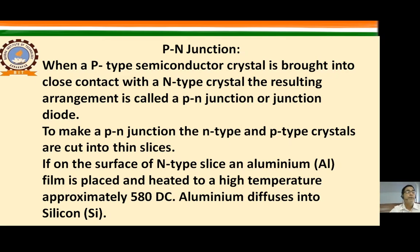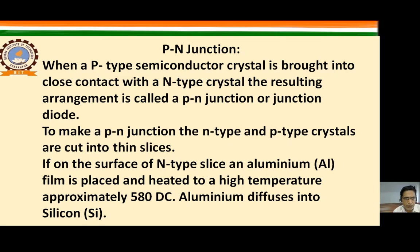When a p-type semiconductor crystal is brought into close contact with an n-type crystal, the resulting arrangement is called a p-n junction or junction diode.